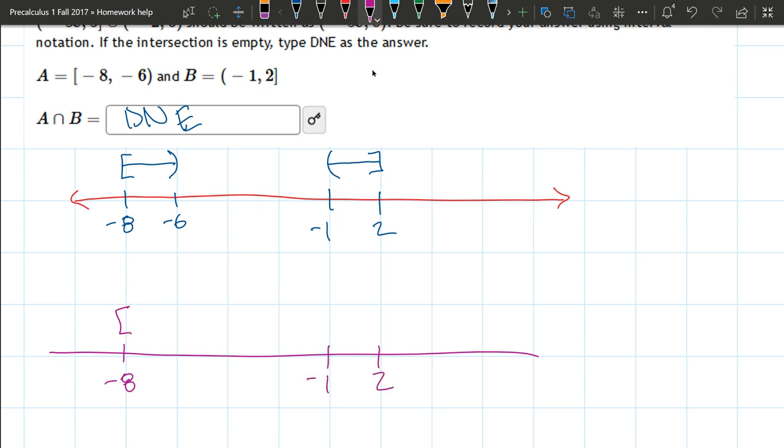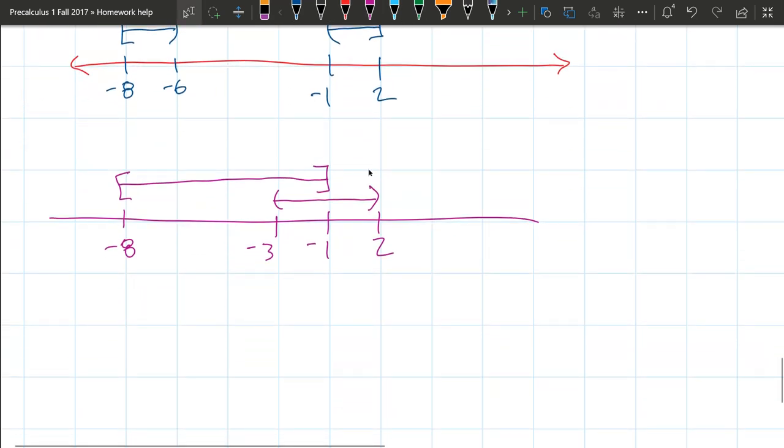I'll take my first set to go like that, and I'll take my next set going from negative 3 to positive 2. Now, if I intersect these two, I'll switch to another color and you can see right here is where they're going to intersect.